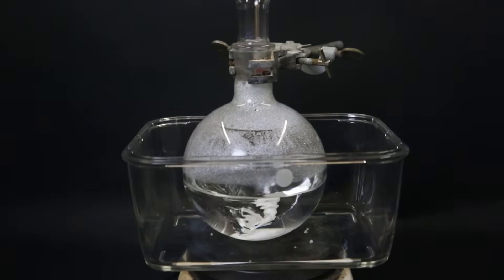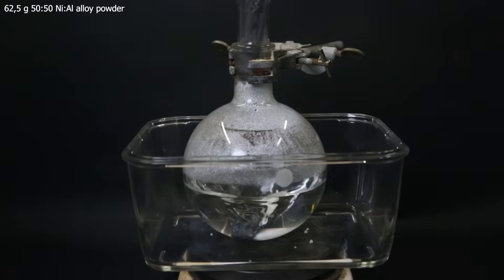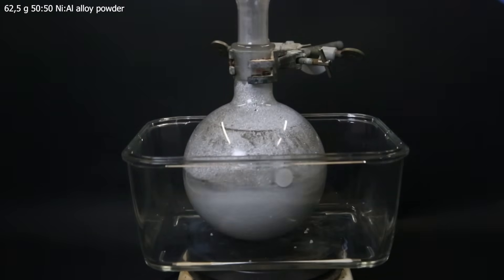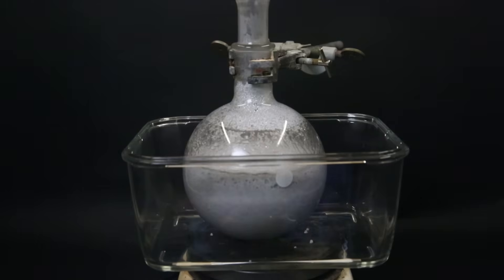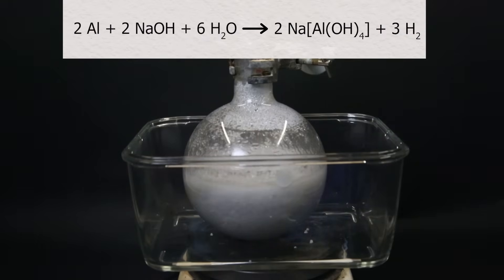I then slowly start adding in 62.5 grams of a powdered 50-50 nickel aluminum alloy. I add it in at such a rate that the mixture doesn't foam over. In this reaction the aluminum is getting consumed by the sodium hydroxide to form sodium aluminate and hydrogen gas.